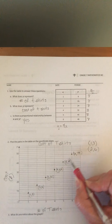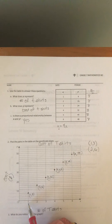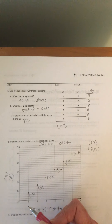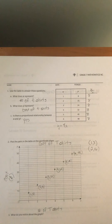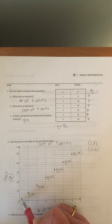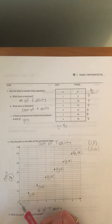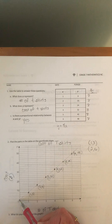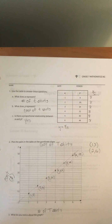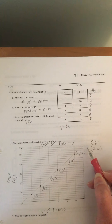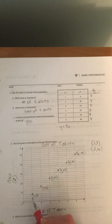What do you notice about this graph? It is linear — you can draw a straight line through the points. As x increases, y increases as well. Specifically, when x increases by 1, y increases by 8. And connecting the dots, the line starts at the point of origin, 0 comma 0, and goes uphill from left to right.